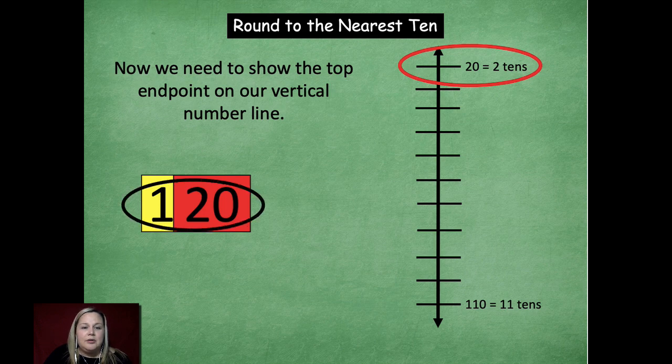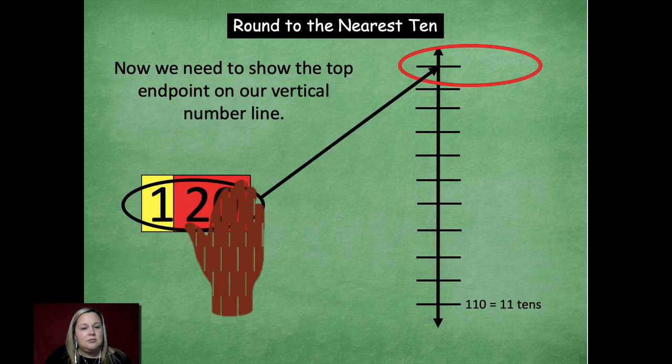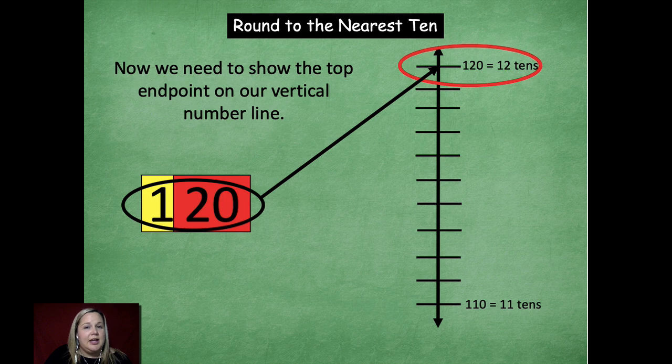Cover up your zero in the ones place. And now we're going to take those twelve tens that we have and bring it up to our end point. Okay? So that's a little bit tricky as you go forward, but still you can focus on you had eleven tens down here. Now you have twelve tens at your ending point.